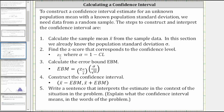This lesson will show how to calculate a confidence interval for an unknown population mean and a known population standard deviation. In this section, we know the population standard deviation given by sigma.